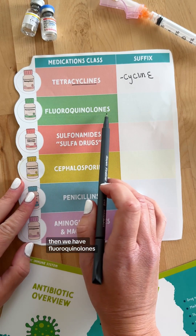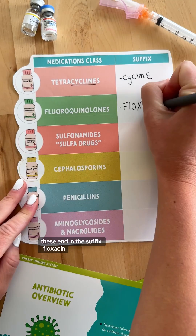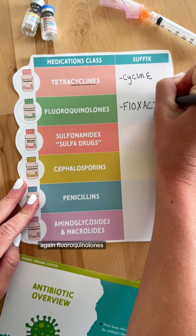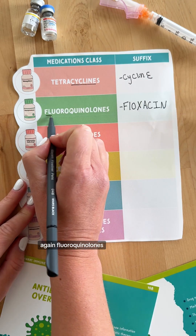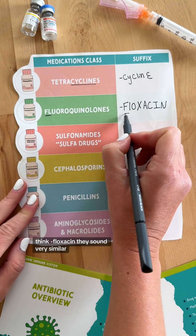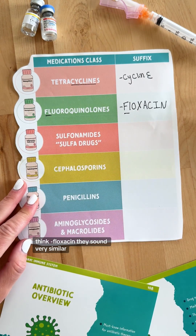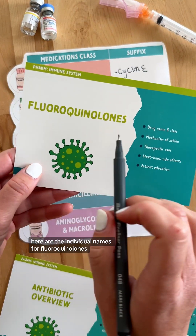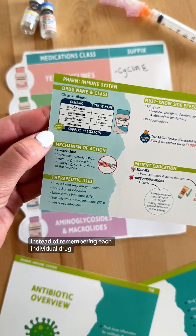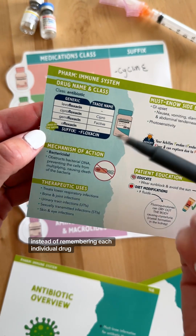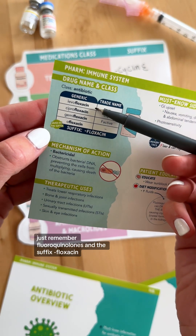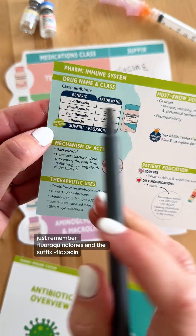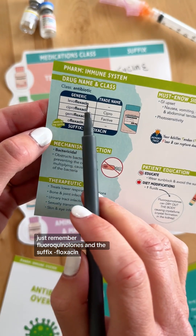Then we have fluoroquinolones. These end in the suffix -floxacin. Fluoroquinolones — think -floxacin — they sound very similar. Here are the individual names for fluoroquinolones. Instead of remembering each individual drug, just remember fluoroquinolones end in the suffix -floxacin.